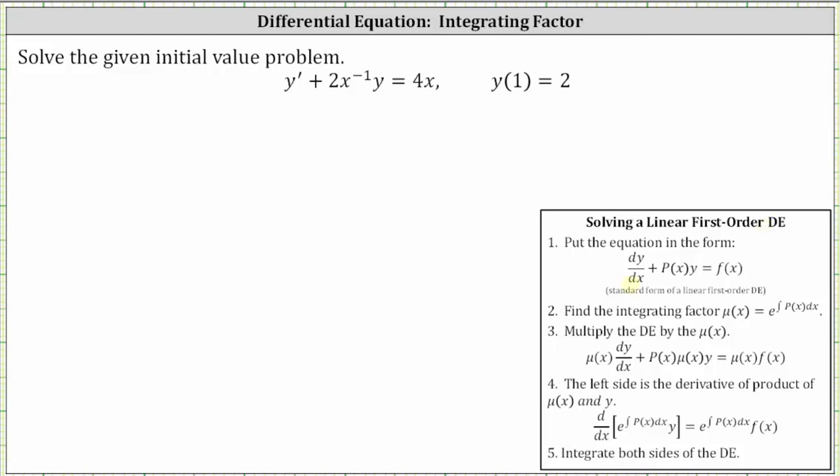Let's rewrite y prime as dy/dx and two x to the power of negative one as two divided by x. This gives us dy/dx plus two divided by x times y equals four x.